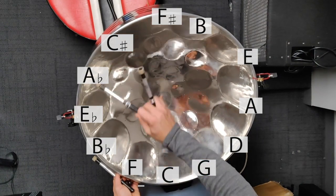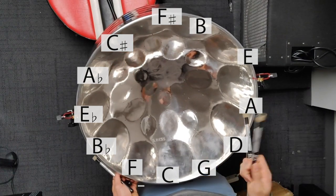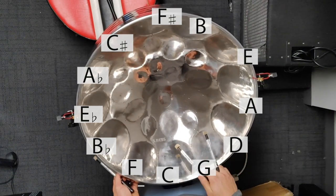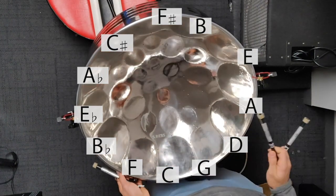And if we go to this side, we're actually going in fourths. Because if you flip a fifth, you get a fourth. C to F to B flat, E flat, A flat, C sharp and so on.